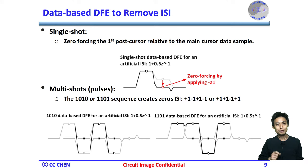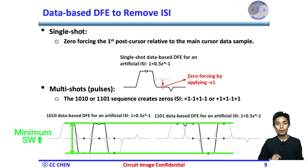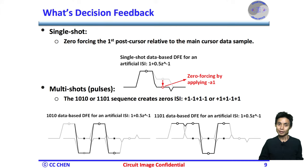Yes, that's very simple. If we know there is an ISI at the first post-cursor and the corresponding strength 0.5 and polarity, then we can simply force the first post-cursor to be zero. After removing the ISI, the multi-shot data samples are back to maximum and equal values for different patterns, which would be exactly the same as the bitstream feeding through a lossless channel.